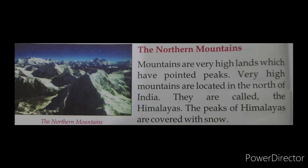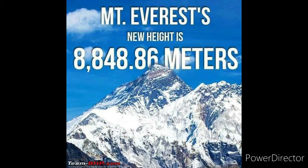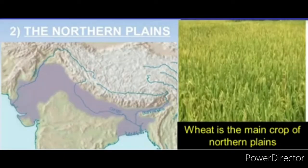Mountains are very high lands which have pointed peaks. Very high mountains are located in the north of India — they are called the Himalayas. The peaks of the Himalayas are covered with snow. In the Himalayas, Mount Everest is the highest peak at 8848 meters. It is also the highest peak in the world, but it is located in Nepal.